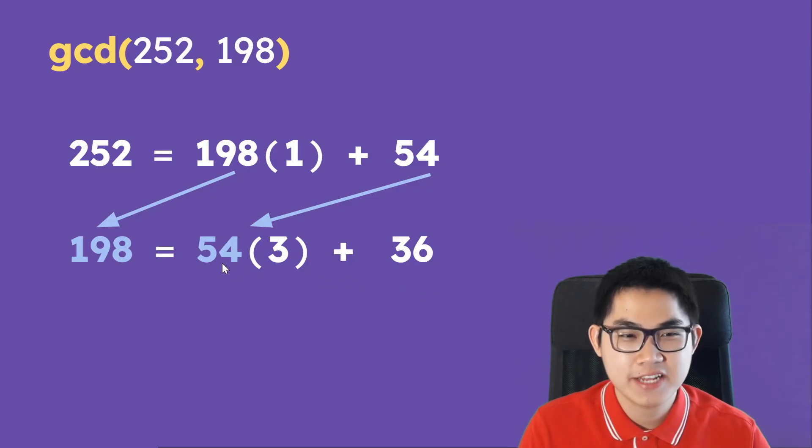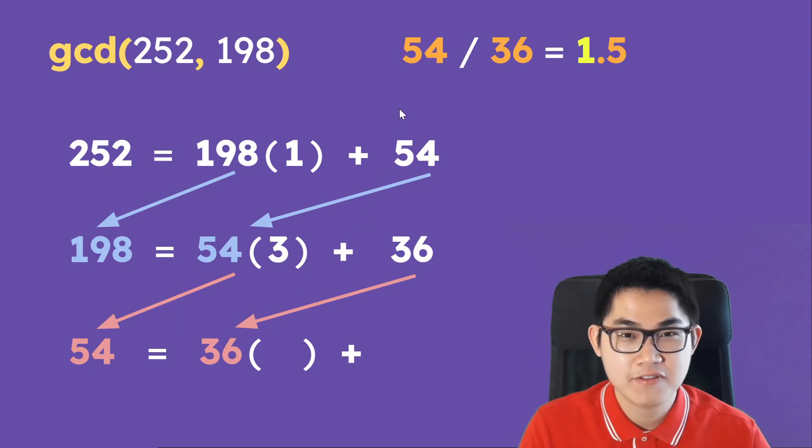And then we take the 54, we bring it down here, and the 36, we bring it down here, and then we have 54 divided by 36, which is 1.5. We put the 1 here, find the remainder, which is 18.